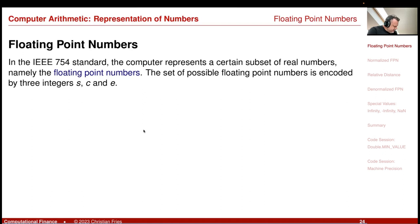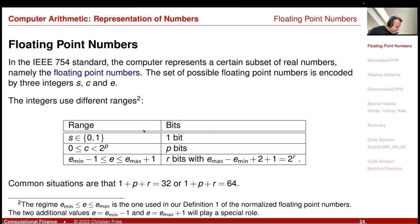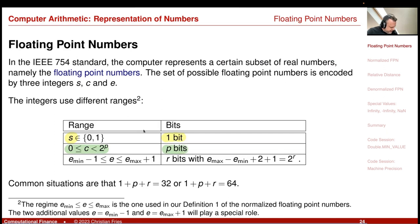The IEEE 754 standard represents a certain subset of the real numbers — the floating point numbers — and these are encoded by three integers: S, C, and E. These three integers have different ranges. S encodes the sign, so we need one bit, plus or minus. C encodes the mantissa, and we use P bits for that. Then there is an exponent encoding the scale, for which we use R bits.